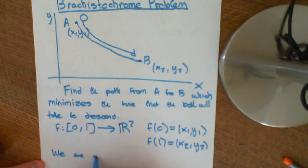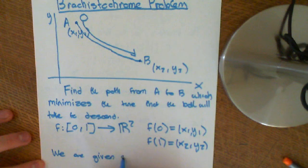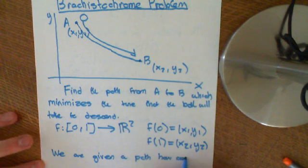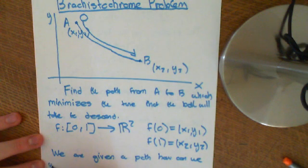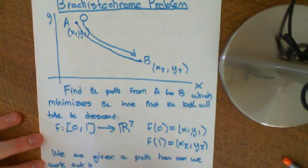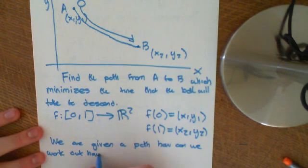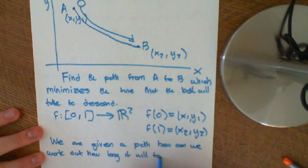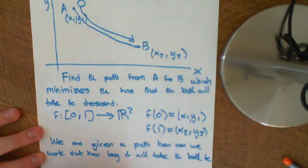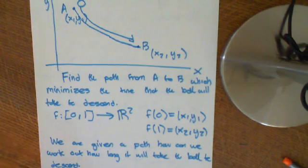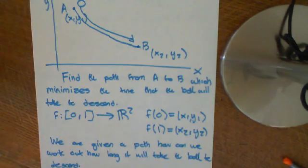And apart from that, you can go wherever you like. And we just want to know what is the path that will minimize the time of descent of the ball. So what we need to do is work out how much time is it going to take, given the path. So let's say we are given a path.